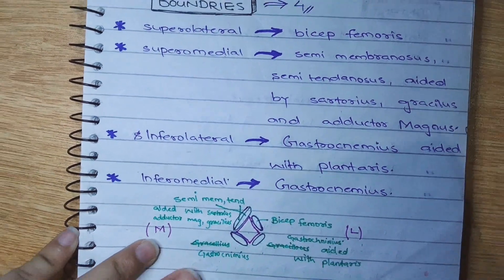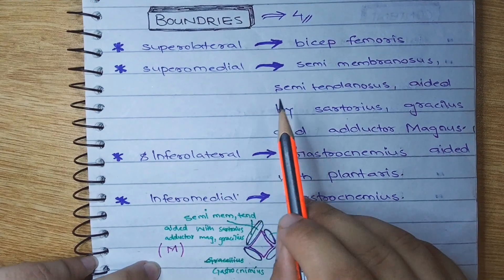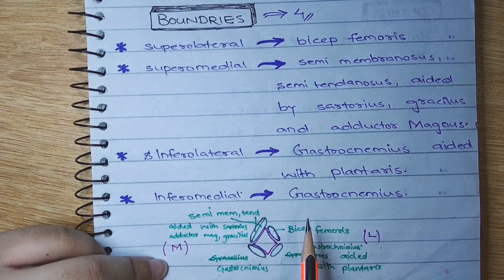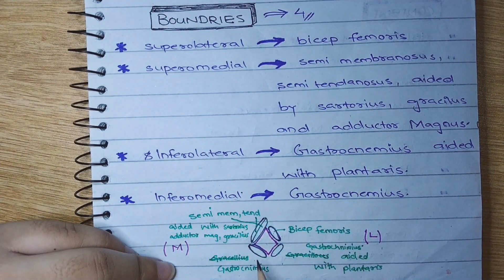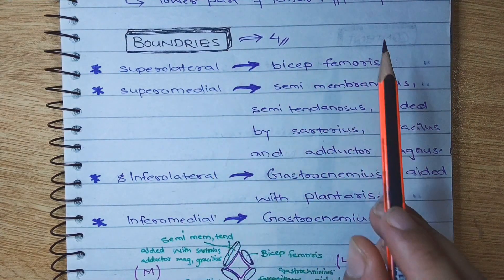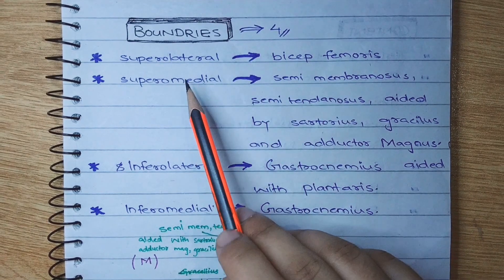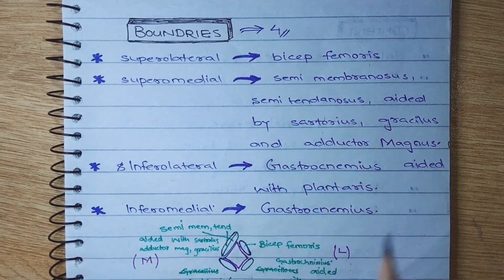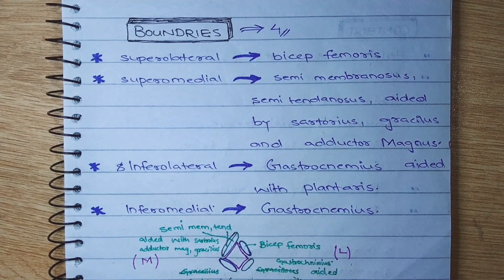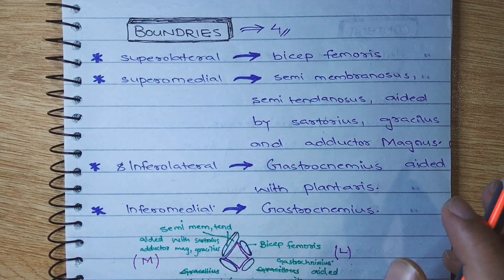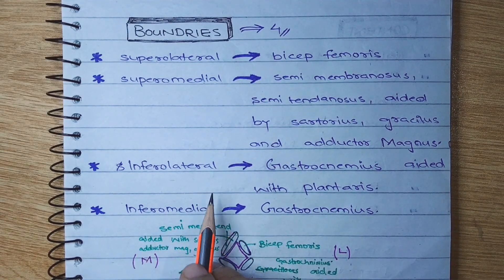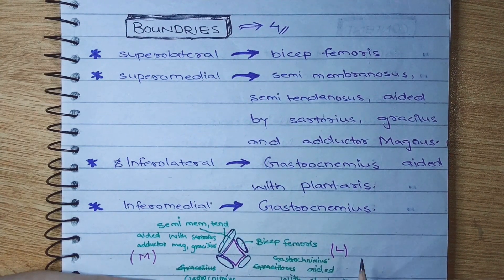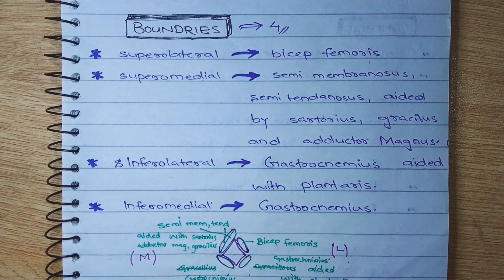Let's talk about the four boundaries in detail. The superior lateral boundary is the biceps femoris. The superior medial boundary is semi-membranosis and semi-tendinosus — semi-membranosis is below and semi-tendinosus is on the upper side — aided by sartorius, gracilis, and adductor longus. The inferior lateral boundary is gastrocnemius aided with the plantaris muscle.